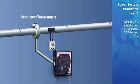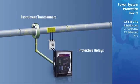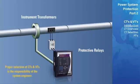Instrument transformers supply protective relays with current and voltage for measurement. This high current and voltage is first converted by the transformers to much lower quantities that can safely be injected into the relay for measurement. It is important to note that the proper selection of current and voltage transformers for protective relaying applications is the responsibility of the system engineer.